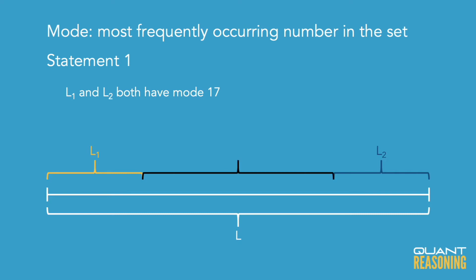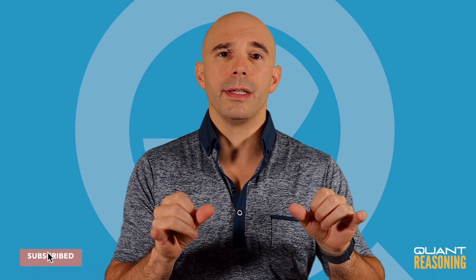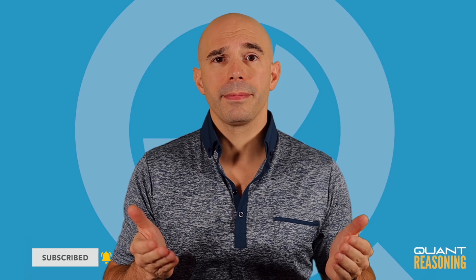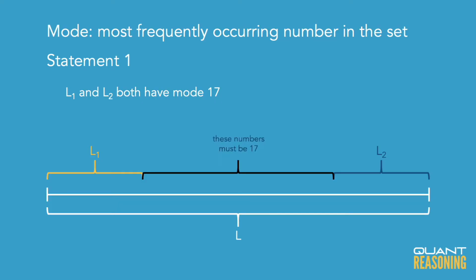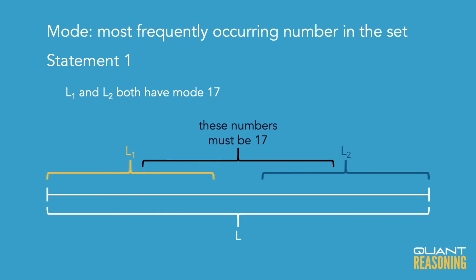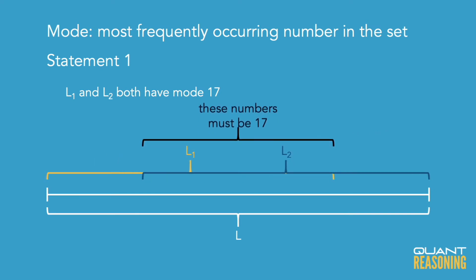Because the list is arranged in ascending order, and 17 appears in both the lower list and the higher list, if there are numbers in between the lists, those numbers all have to be 17 — because the list is in ascending order. In the other extreme, if these lists are overlapping, the entire overlap must also be 17, again because the list is arranged in ascending order.